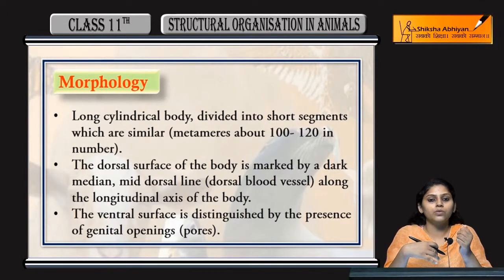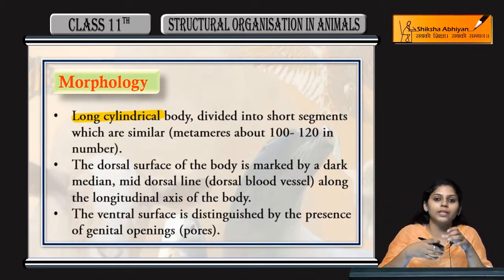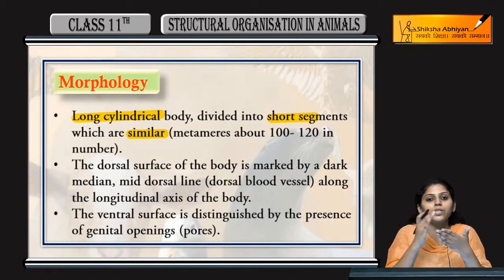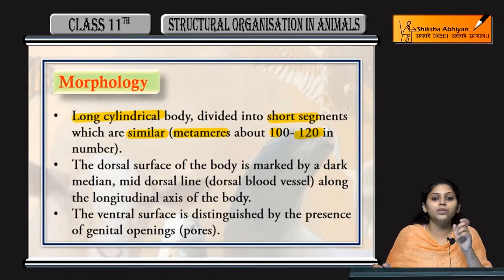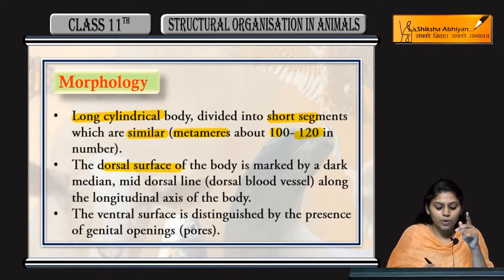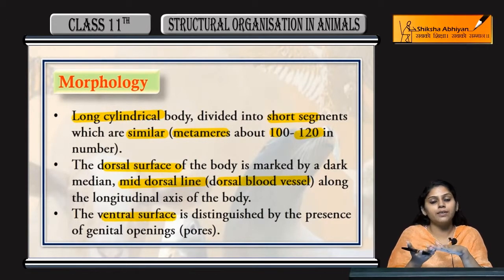Let's discuss the morphology of earthworm. Earthworm ki appearance kaisi hai - they are long cylindrical structures, means unki body cylindrical form hoti hai. They are divided into short similar segments. Wo sabhi ek-dusaray ke similar hote hai. They are around 100 to 120 number jo metamers hote hai, jo segments hote hai. Dorsal surface jo hoti hai earthworm ki, us mein mid dorsal line that is dorsal blood vessels form kerti hai.